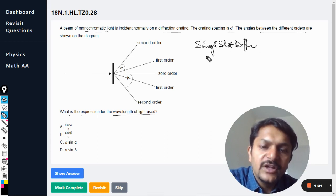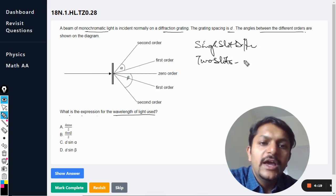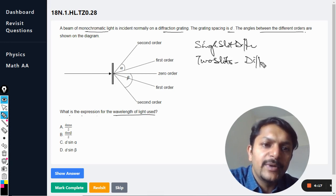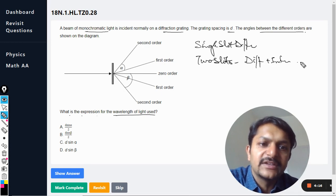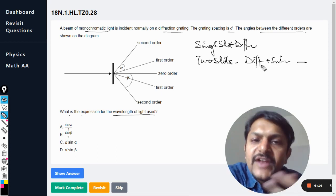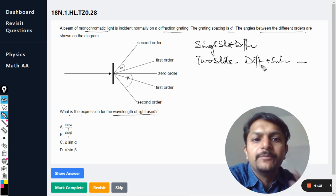Single slit diffraction. And then there are two slits we are using. Now in this case, diffraction plus interference is taking place. Interference is also taking place, diffraction is also occurring at the same time. These are the two things which are happening there.